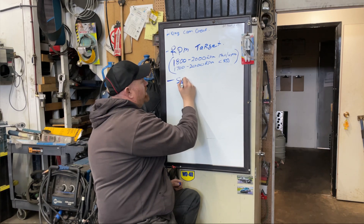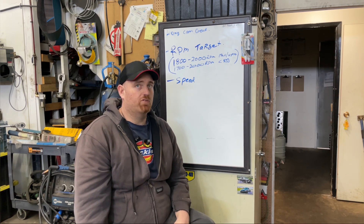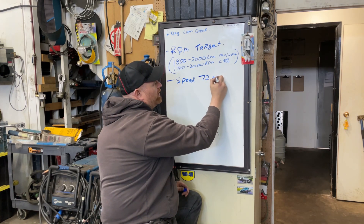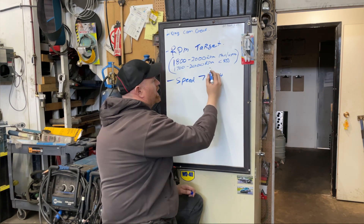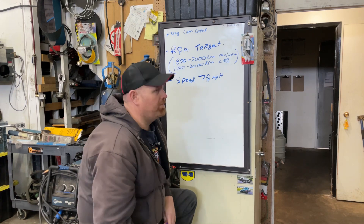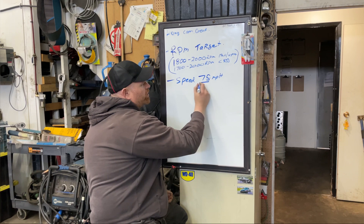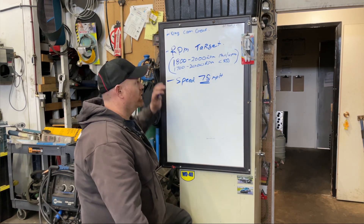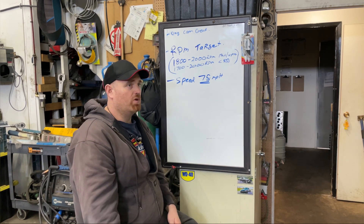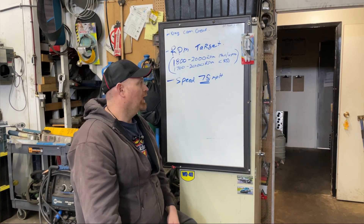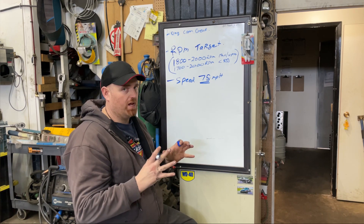Now we need to know our speed that we want to be driving. Our speed limit here is 110 kilometers an hour, 70 miles an hour, and I usually go about 75 miles an hour. So our target RPM at 75 miles an hour is what we're shooting for. Whatever your average speed is going to be, that's where you want to put your gear ratio setup in. If your average is 50 miles an hour, do this calculation at 50 miles an hour, because you want to put it in your normal operating range.